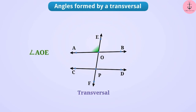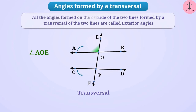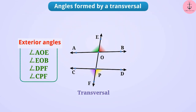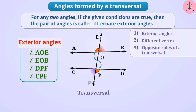Angle AOE is an exterior angle. Similarly, angle EOB, angle DPF, and angle CPF are also exterior angles. Considering angle AOE and angle DPF: both are exterior angles with different vertices and on opposite sides of the transversal — such pairs are called alternate exterior angles.